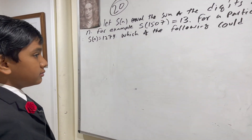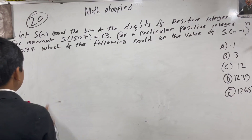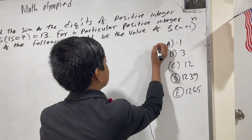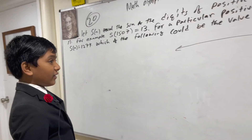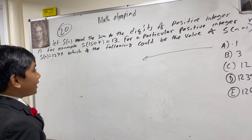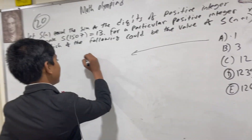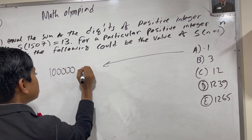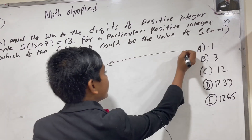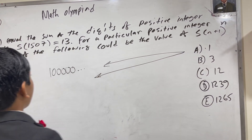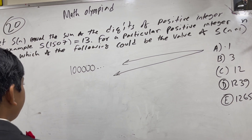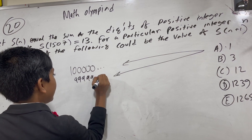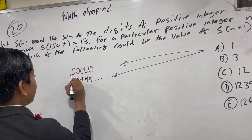Let's understand this problem. First, what if answer A was correct? Let's do this proof by contradiction. If A was correct, then s(n+1) would have to be 1, followed by a repeating sequence of zeros. That implies n itself must be 9, 9, 9, 9, 9... as adding one more to that would turn it into this.